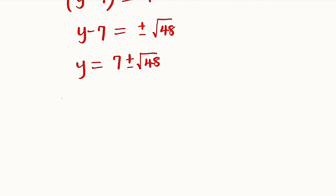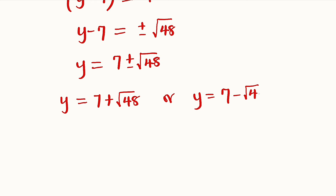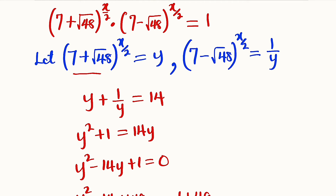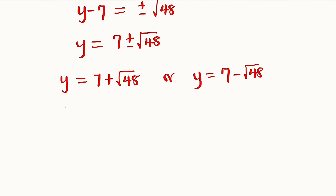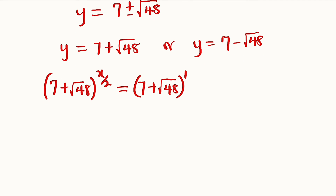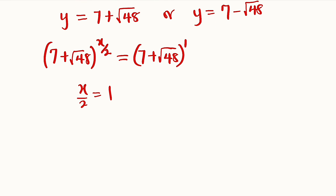We now have two values of y. The first is y equals 7 plus square root of 48. Recalling that y equals 7 plus square root of 48 all to the power of x divided by 2, this equals 7 plus square root of 48, which we can write as that base raised to the power of 1. Since the bases are the same, we equate the powers: x divided by 2 equals 1. Multiplying both sides by 2 gives x equals 2.